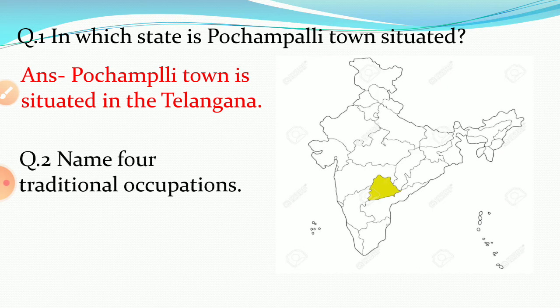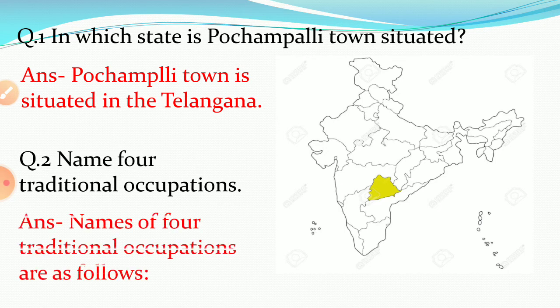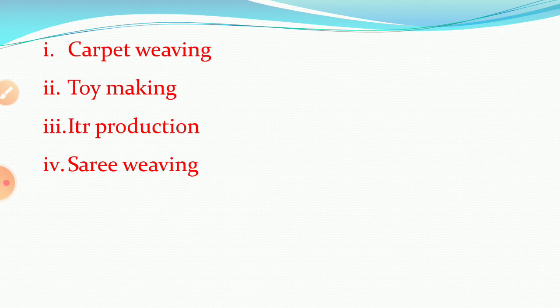Now, name four traditional occupations. Four traditional occupations are as follows: carpet weaving, toy making, ithra production, and sari weaving.